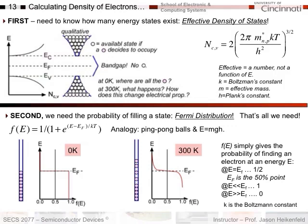To begin with, the first thing we need to know is not how many carriers we have, but how many possible energy states exist that those carriers could occupy. Remember, when we built up our band diagrams, it was all based on the number of energy levels in a silicon atom. So the first thing we need to know again is how many energy states are available.